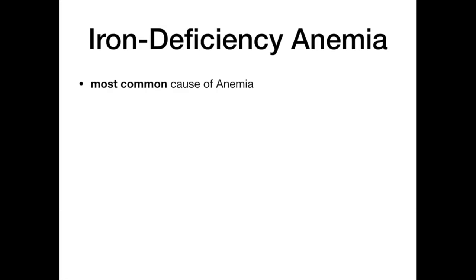Iron deficiency anemia is the most common cause of anemia — that's a high-yield point right off the bat. It classically presents in someone with some type of bleeding. If you have a patient with iron deficiency anemia and you don't know why, in an older male it's colon cancer until proven otherwise. In a female, it could be related to her menstrual period, among other causes. For USMLE and Comlex, let's talk about the labs.